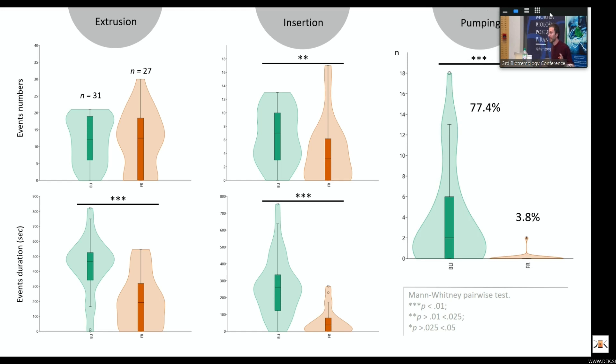And the most striking evidence is that the events of pumping were much more frequent when the larvae were alive. We see here that in 77% of our samples we had a pumping event. When it comes instead to frozen blueberries where larvae were dead, we only had one case out of 27 that actually performed pumping.